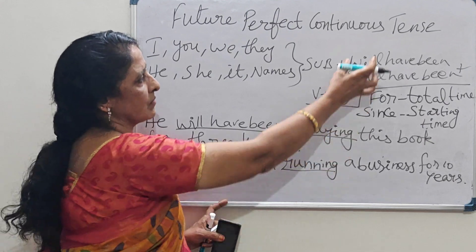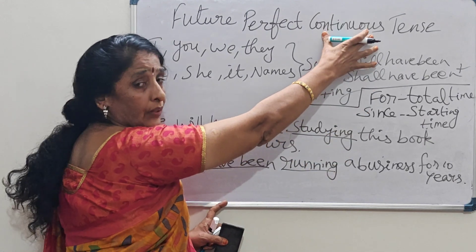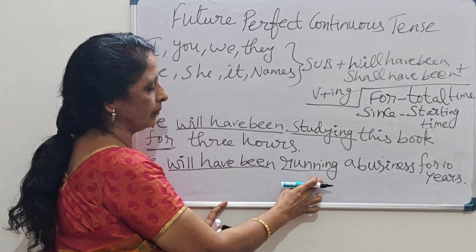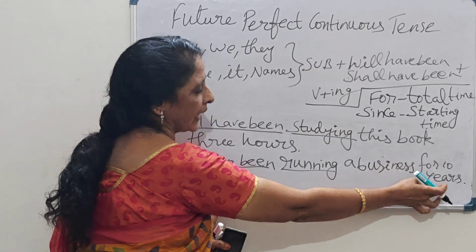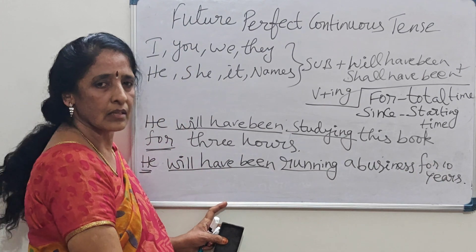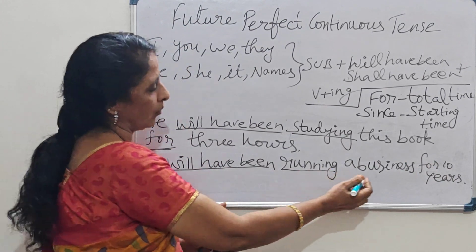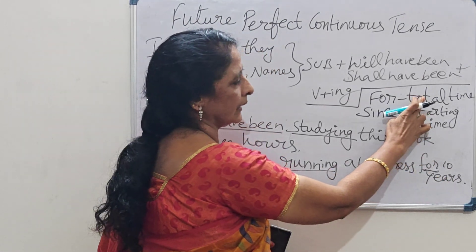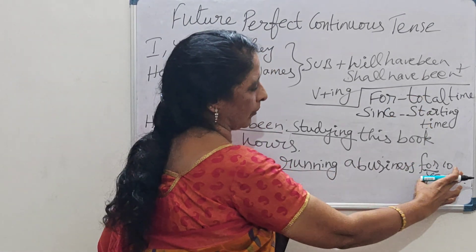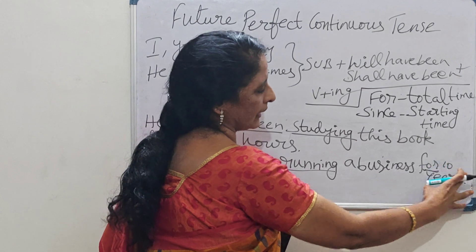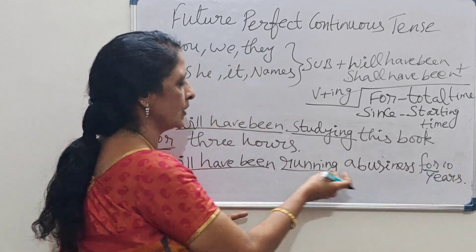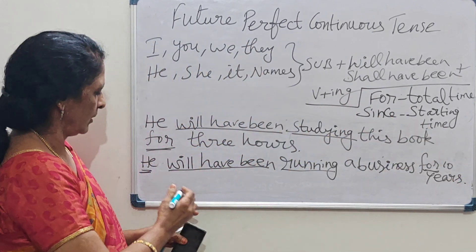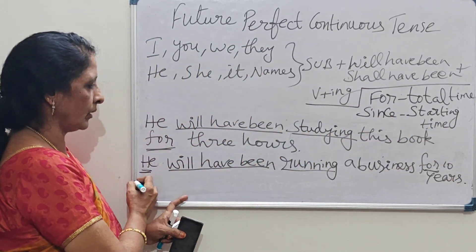Fourth example: 'He will have been running his business for 10 years.' 'Running' is verb plus ing for the continuous tense. We use 'for' here because we are stating the total time — how many years he has been doing his business: 10 years.